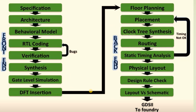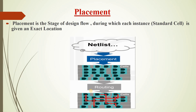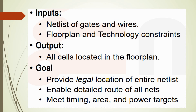The second step of back-end design flow is placement. Placement is the stage during which each instance — that is, each standard cell — is given an exact location. The inputs for placement are the netlist of gates, floorplanning data, and technology constraints. After placement, all the standard cells are located in the floorplan. The main objectives of placement are to provide legal locations for the entire netlist, enable detailed routing of all nets, and meet timing, area, and power constraints.